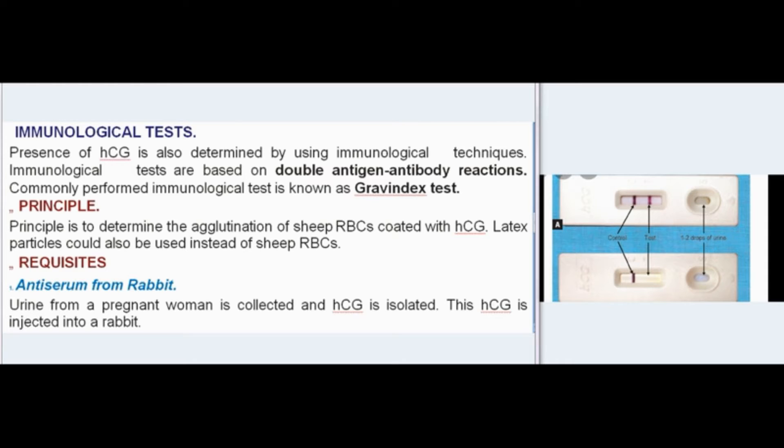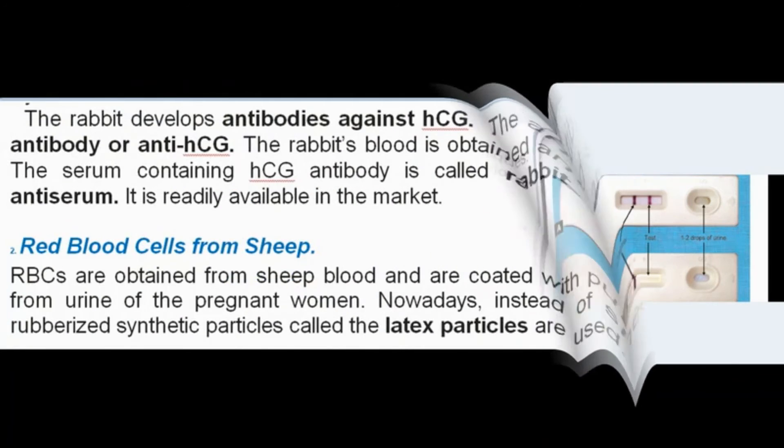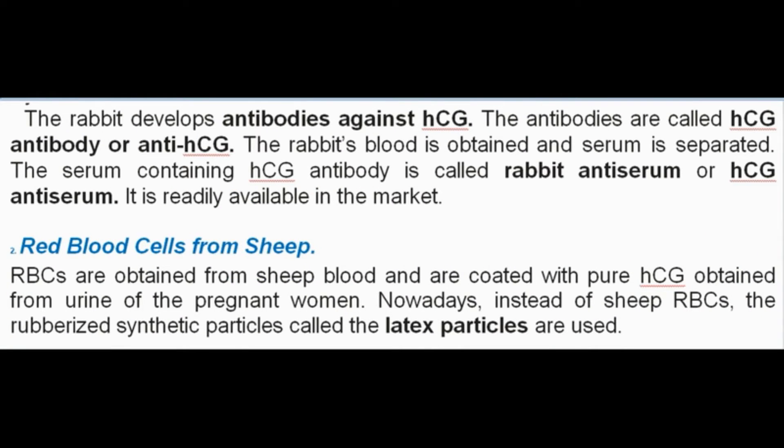For the requisites: urine from a pregnant woman is collected and HCG is isolated. This HCG is injected into a rabbit, which then develops antibodies against HCG — called anti-HCG antibody. The rabbit's blood is obtained and serum is separated. The serum containing HCG antibody is called rabbit antiserum or HCG antiserum, and is readily available in the market.